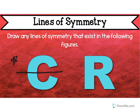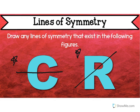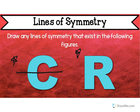Now let's look at the R. Can you find any lines of symmetry on this one? Give you a second to think about it. You're right — there are none. If I went diagonal, it wouldn't work. This diagonal wouldn't work. This one wouldn't work. That one wouldn't work. So R has zero lines of symmetry, and that's okay.